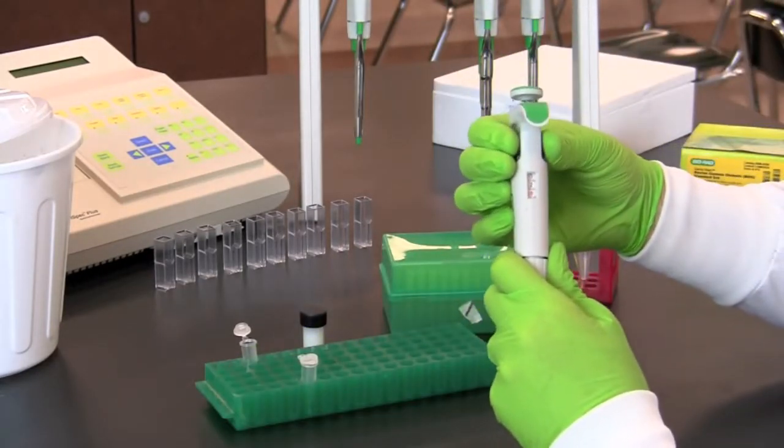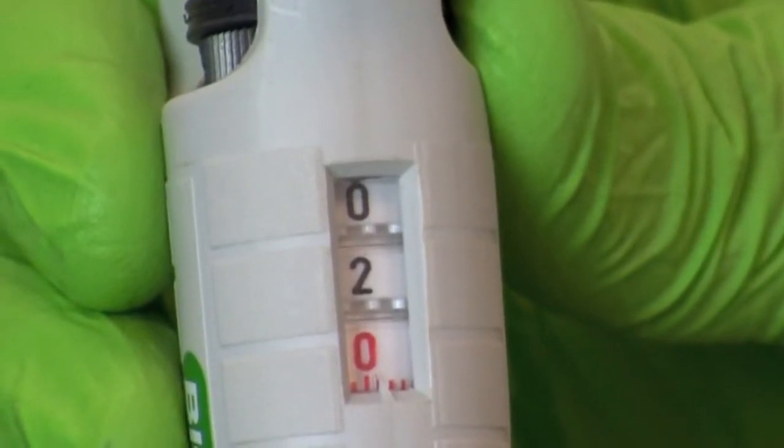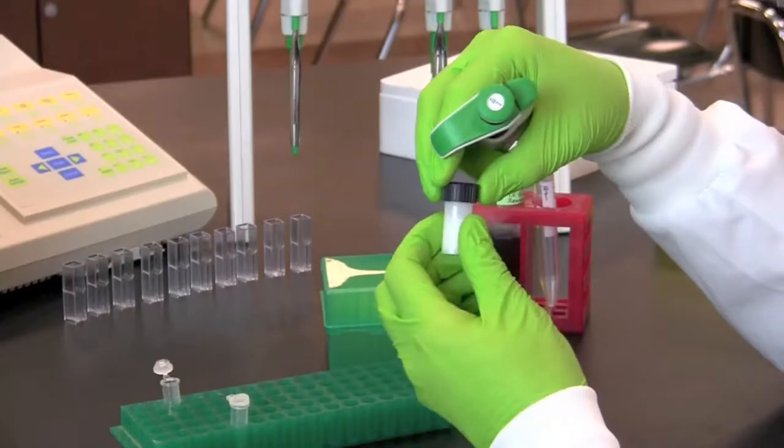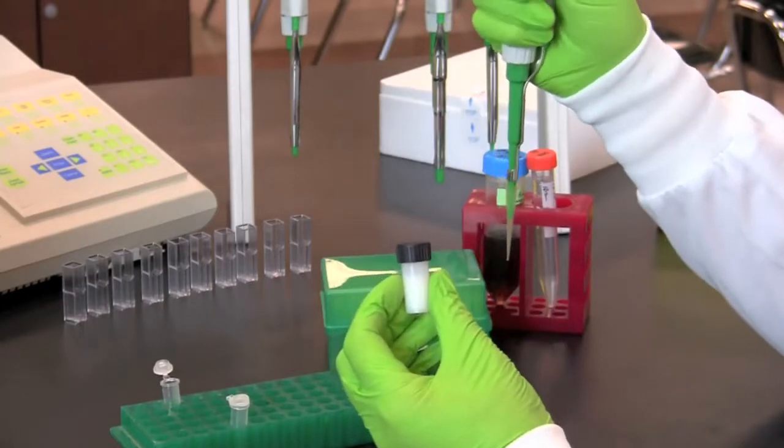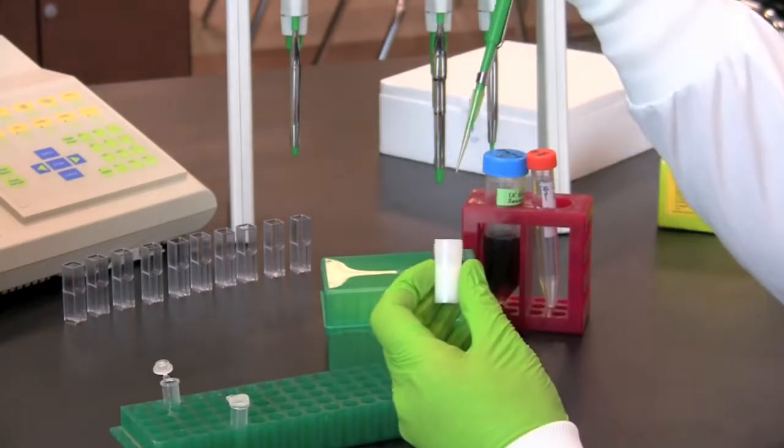Switch to a 2 to 20 microliter micropipette and set the pipette to 2 microliters. Pipette 2 microliters of milk sample into the microtube labeled sample.